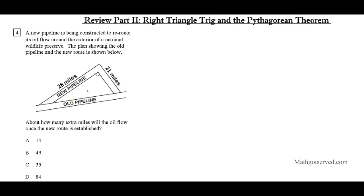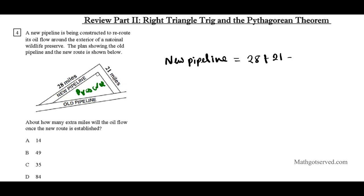The new pipeline goes 21 plus 28 miles, so the oil will flow 49 miles on the new route. For the old pipeline length, we use the Pythagorean theorem since we have a right triangle. We sketch the triangle with legs A equals 28 and B equals 21, and C as the hypotenuse representing the old pipeline.